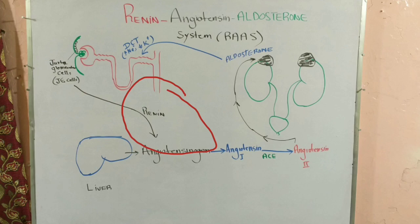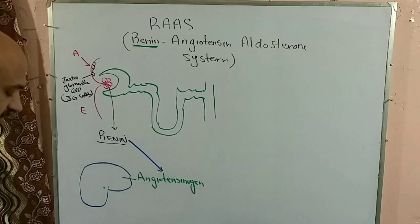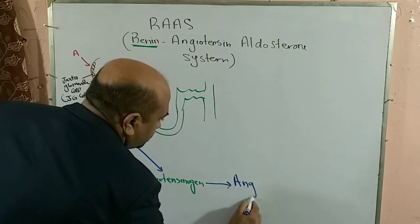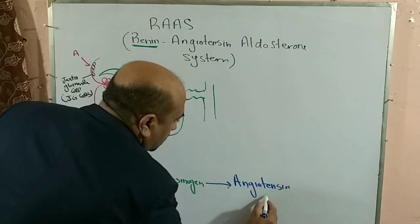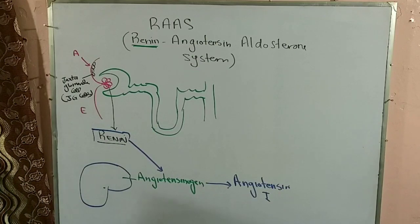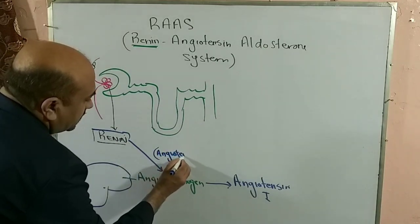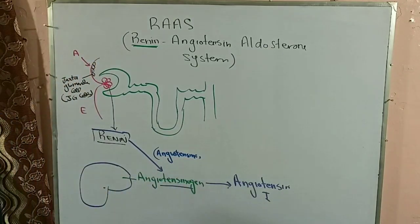Renin has a very important function related to a product of the liver. The liver produces a very important protein which we call angiotensinogen. This angiotensinogen is broken down by renin into angiotensin-1. Renin can also be called angiotensinase, because it breaks down angiotensinogen into angiotensin-1.